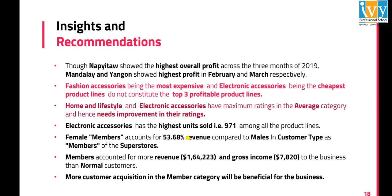Coming to the insights and recommendations: Fashion Accessories being the most expensive and Electronic Accessories being the cheapest product line do not constitute the top three profitable product lines. Home and Lifestyle and Electronic Accessories have maximum ratings in the average categories and hence need improvement in their ratings. Since members brought in more revenue and gross income than normal customers, more customer acquisition in the member category will be beneficial for the business.